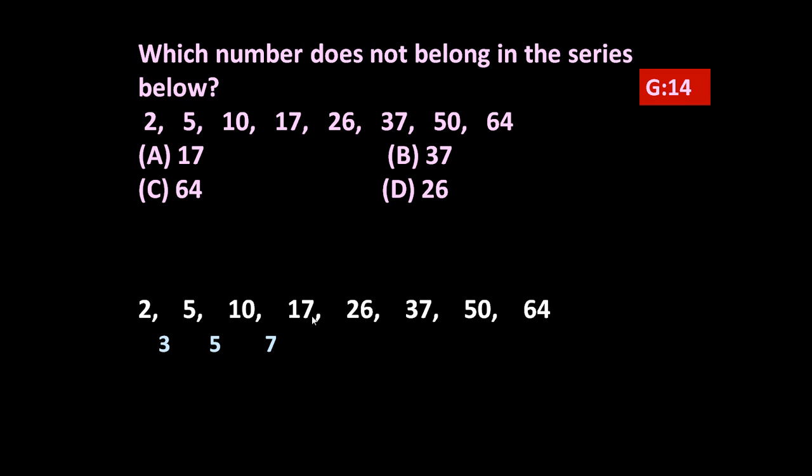is being followed. 26 minus 17 is 9, 37 minus 26 is 11, 50 minus 37 is 13, 64 minus 50 is 14. So this 14 is wrong, it would have been 15, and in this place it would have